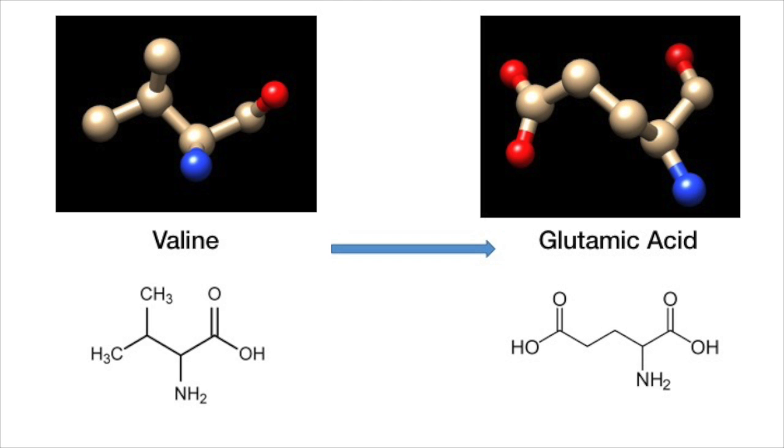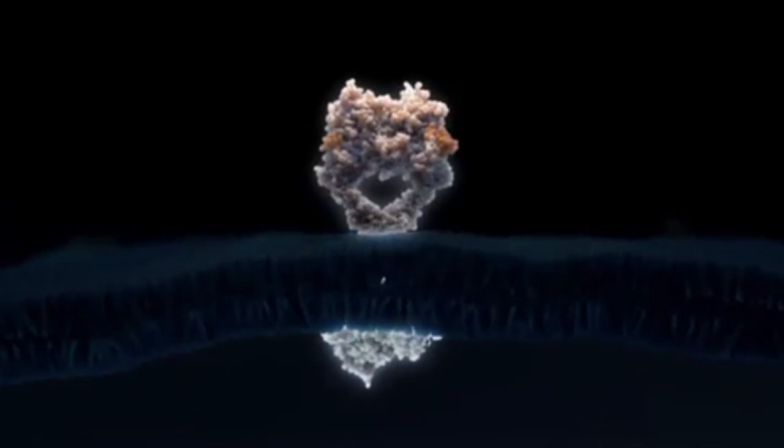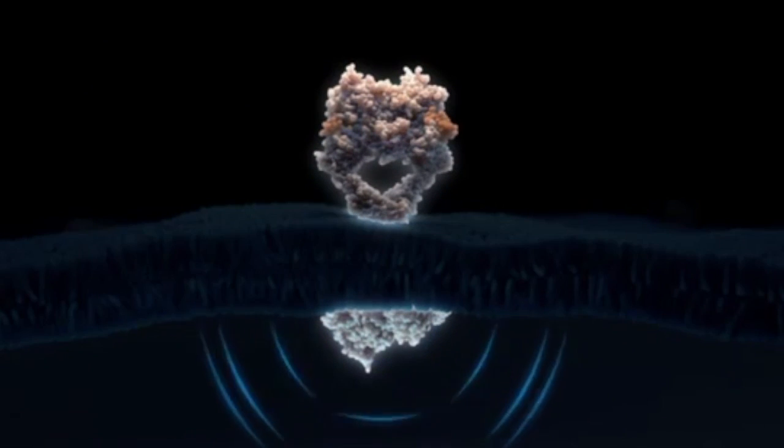Another dramatic effect of a single point mutation is exemplified by the valine to glutamic acid substitution in the new transmembrane domain. This mutation results in the constitutive receptor dimerization and activation of the protein tyrosine kinase function.